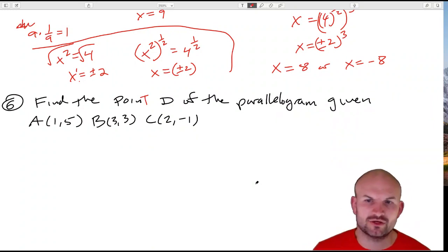So the next one says find the point D of the parallelogram given A(1,5), B(3,3), C(2,-1). And actually, I forgot to copy down the student's point, so I just wanted to make sure I plotted them real quick before I wrote them down, and to make sure there wasn't anything I missed.